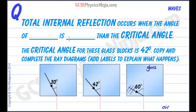So total internal reflection occurs when the angle of incidence is greater than the critical angle for that material. The angle of incidence is the angle between the ray and the normal line and the normal line is the line which is at right angles to the surface where the ray is trying to escape. And here it is, the angle of incidence in this case is 30. So we've got three cases here where the angle of incidence of the ray is coming in at different angles and we need to be able to explain what happens to that ray.